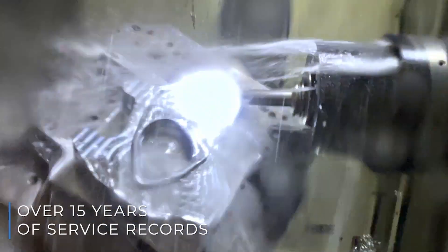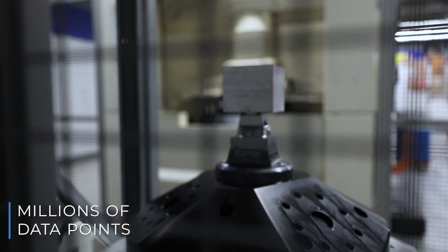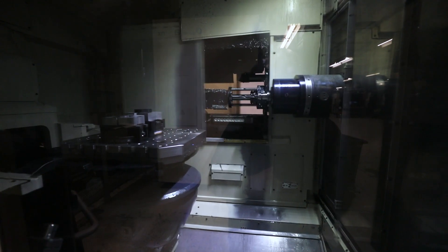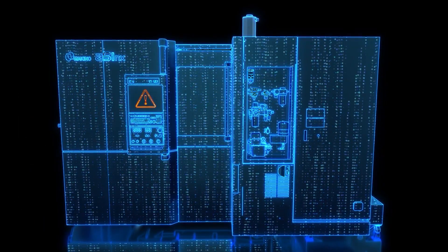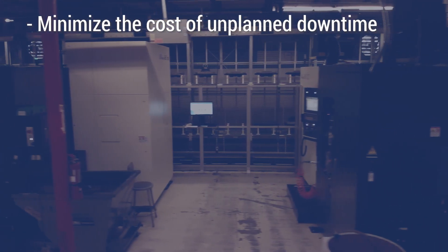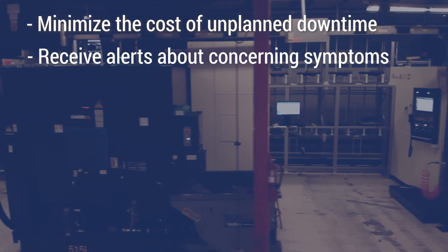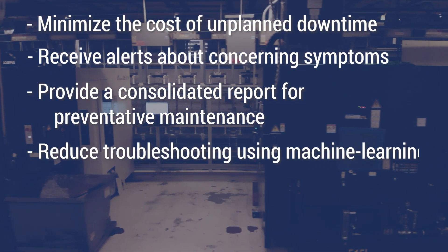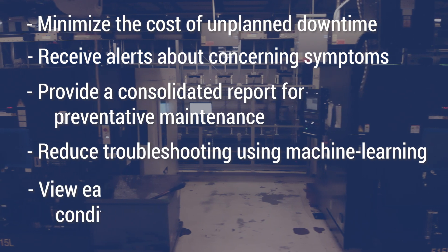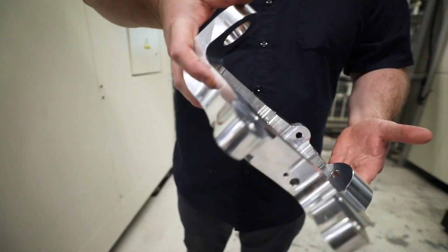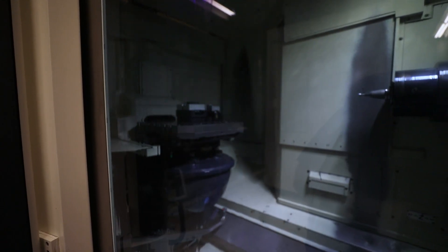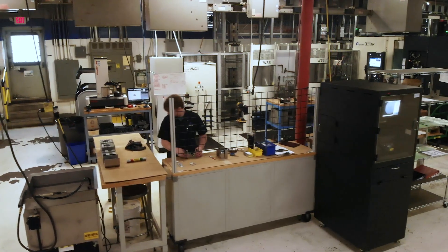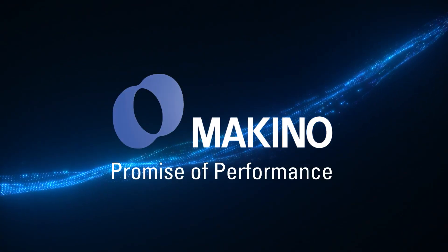MH Max incorporates over 15 years of service records and millions of data points that influence and predict machine downtime. A dedicated onboard computer on each machine allows companies running MH Max to minimize the cost of unplanned downtime, receive alerts about concerning symptoms, provide a consolidated report for preventative maintenance, reduce troubleshooting using machine learning, view easy to understand machine condition summaries. Makino provides you with more than just a machine. We provide effective solutions that keep you working and help to deliver on your commitments to your customers. Makino. Promise of performance.